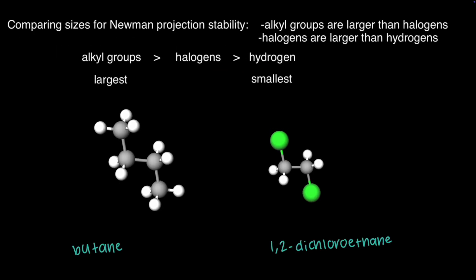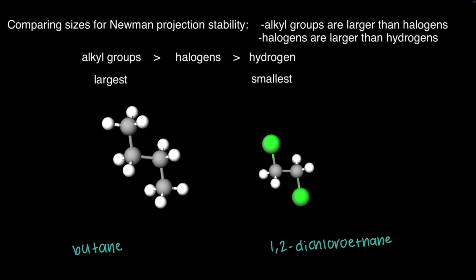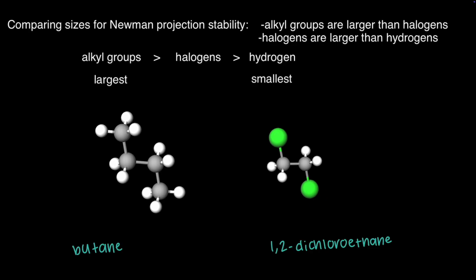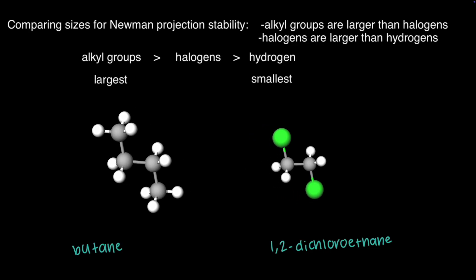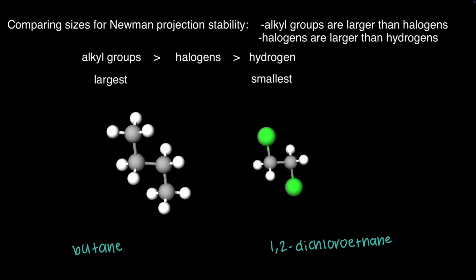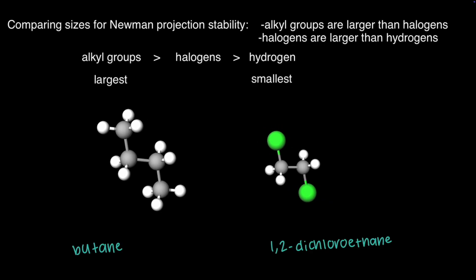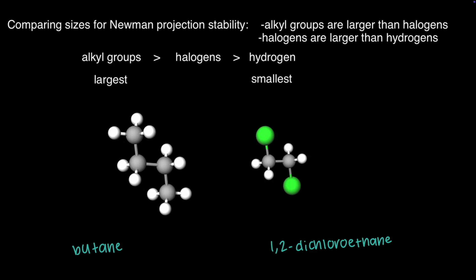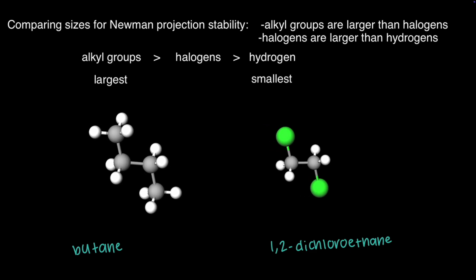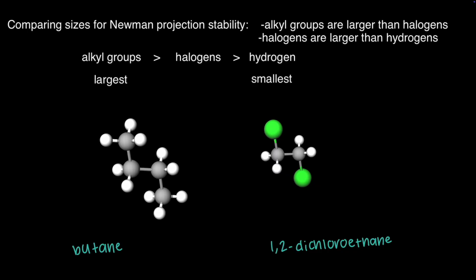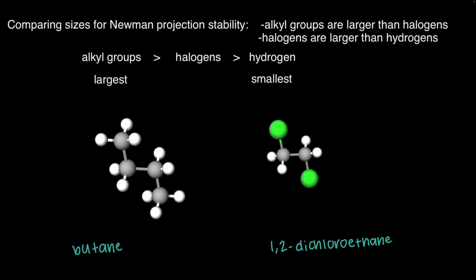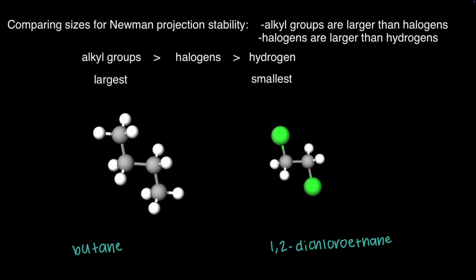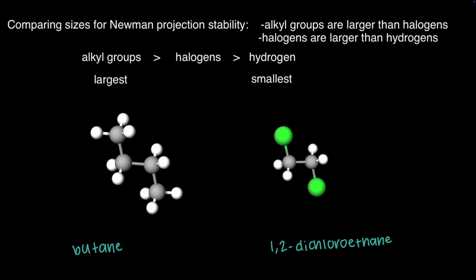When comparing sizes for Newman projection stability, alkyl groups are generally larger than halogens because they have more atoms and take up more space in a three-dimensional way. Alkyl groups like methyls and ethyls have hydrogens that are constantly rotating on those carbons, so they're going to be larger due to this free rotation of all the single bonds when comparing to just one element like a halogen. Halogens are still larger than hydrogen, so eclipsing a halogen with a methyl group is less stable than eclipsing it with hydrogen.